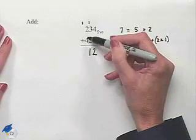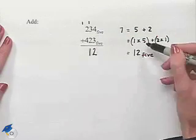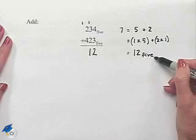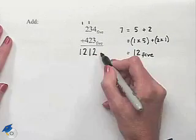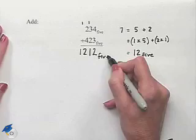1 plus 2 is 3 plus 4 is 7. Well we figured out that 7 over here to the right was 1, 2. So we'll place that in our sum and our answer is 1, 2, 1, 2 base 5.